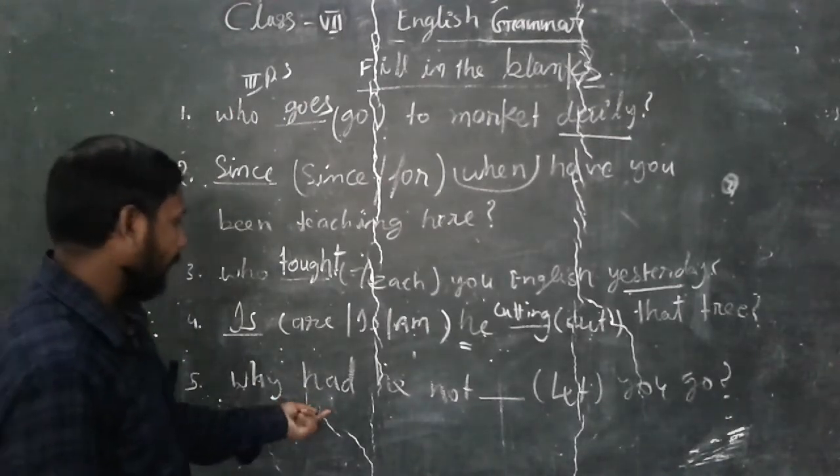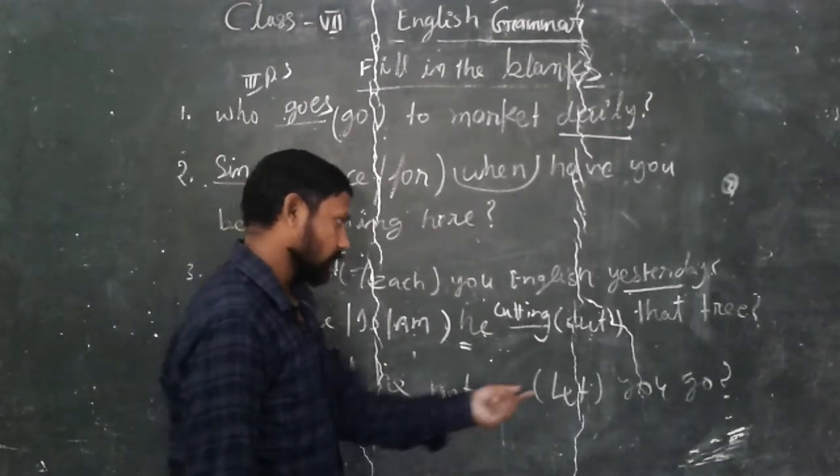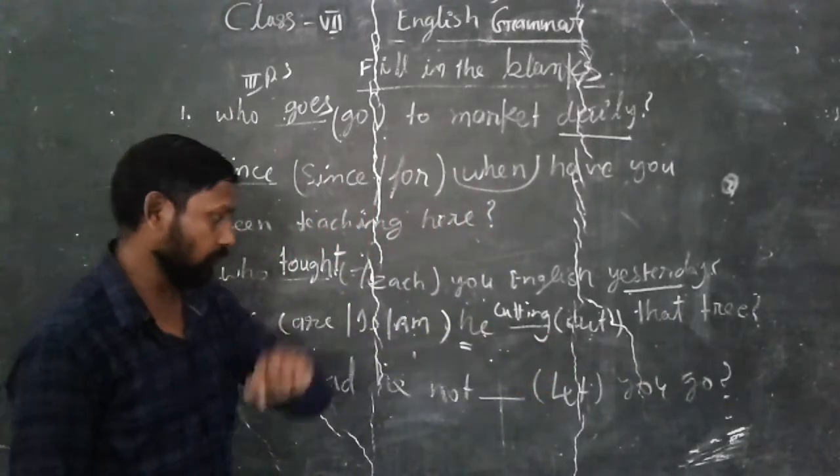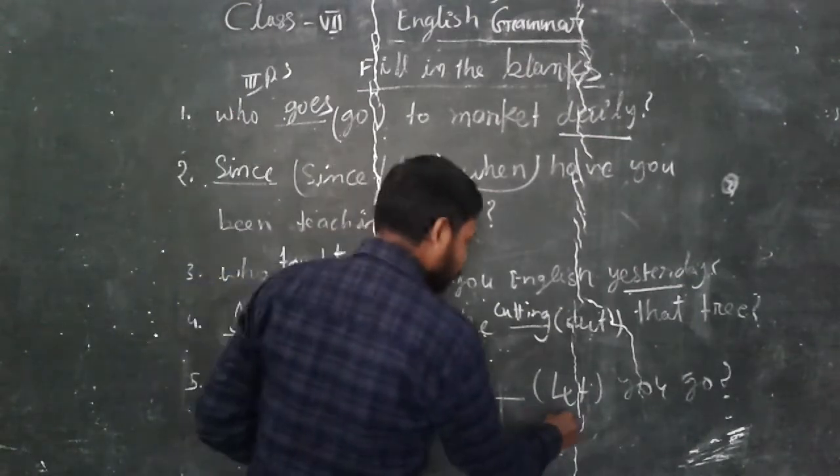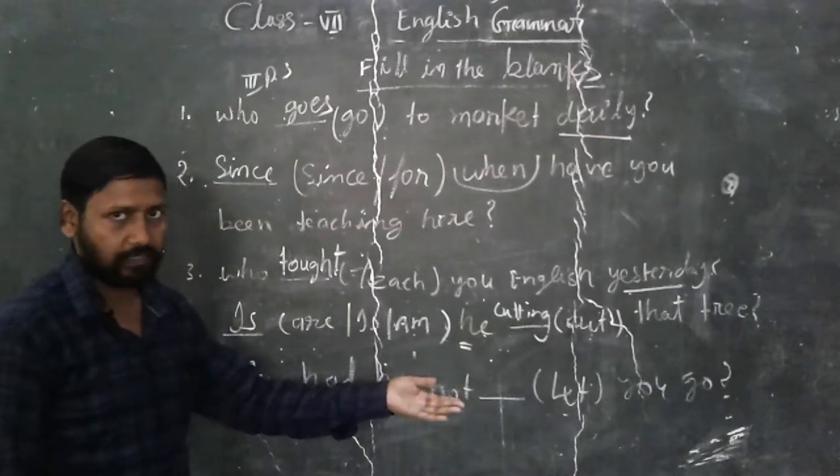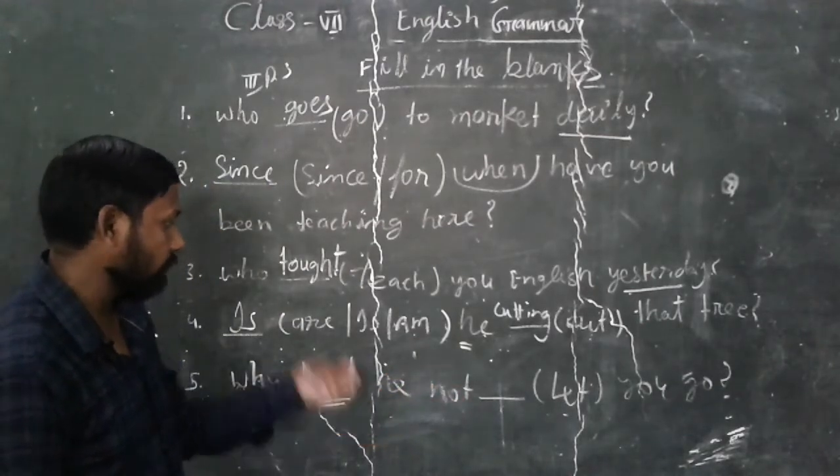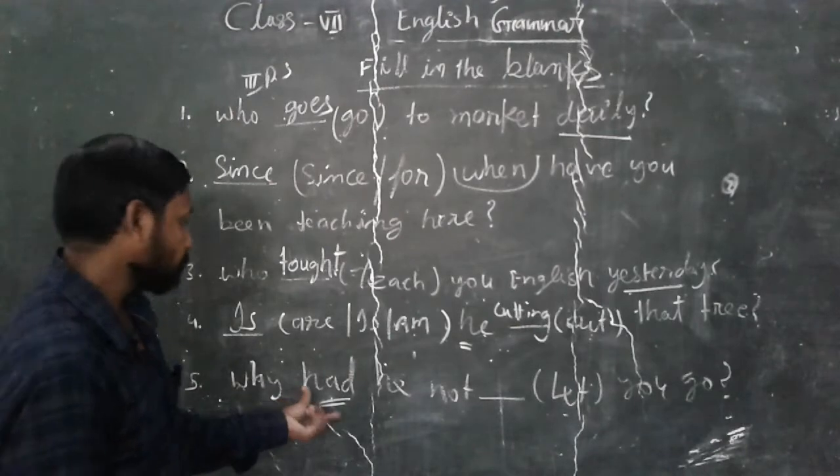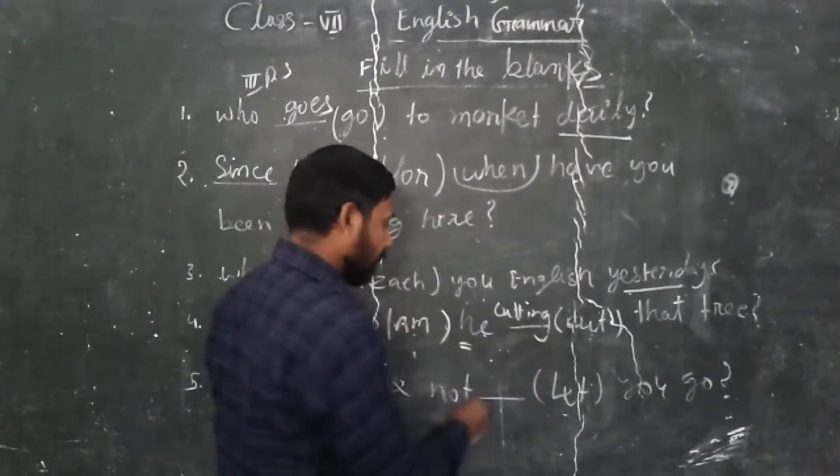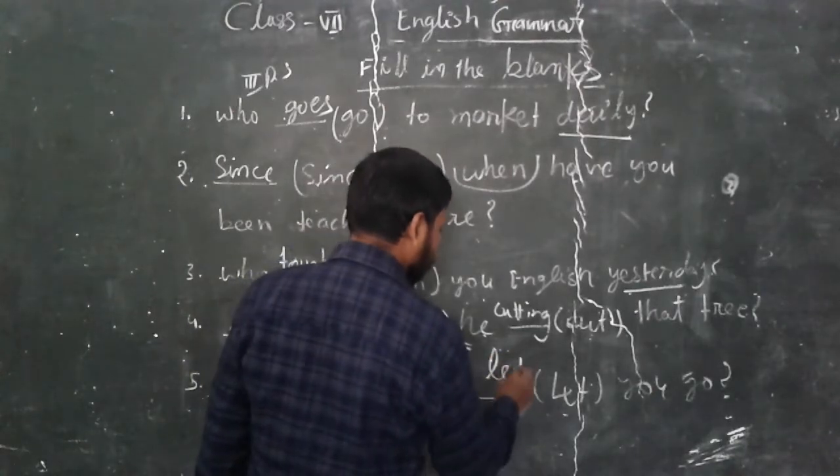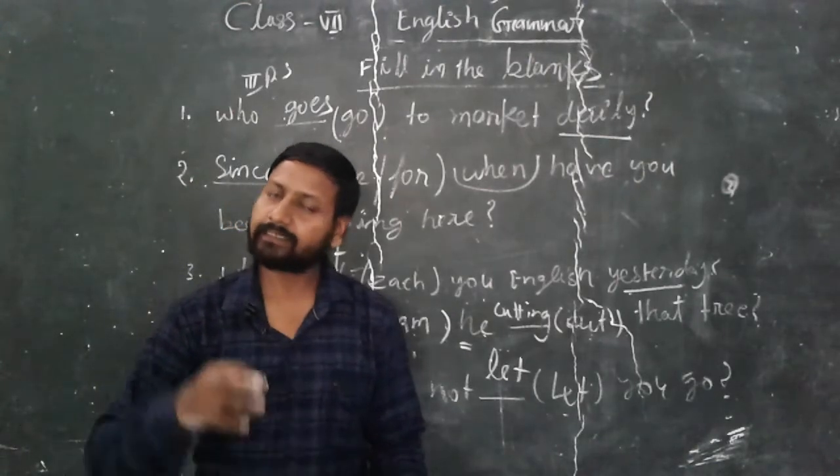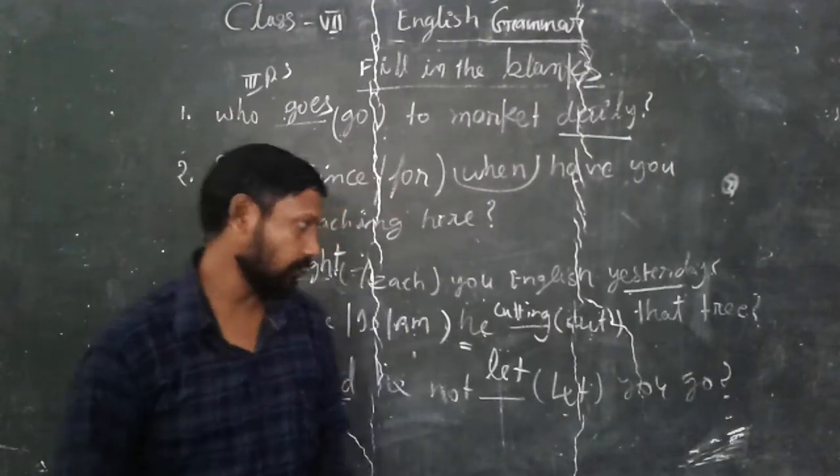Why had he not let you go? So like will change in which perfect tense. According to had, we will use third form of the word. And you know where you are, let has third form let, let, let. So let's do some more examples for getting better understanding.